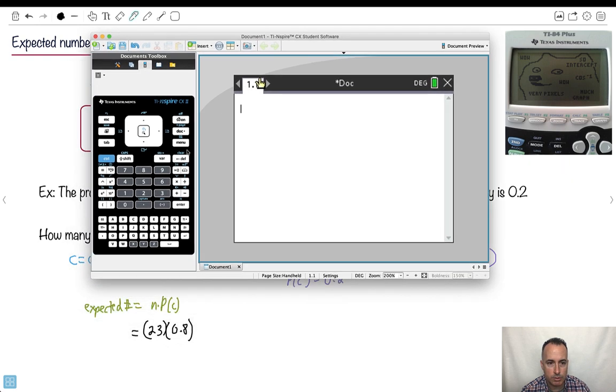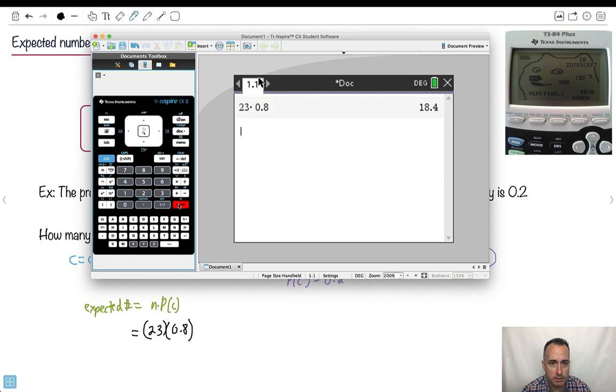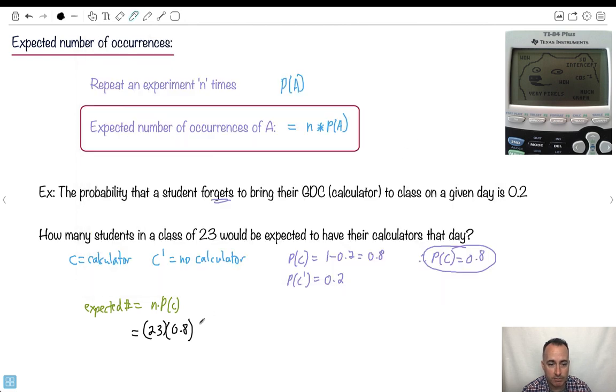What is 23 times 0.8? That gives me 18.4. And this actually would be the answer. I could actually say 18.4 students. It's allowed to be a decimal.